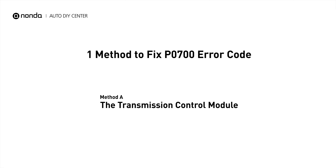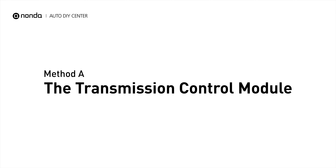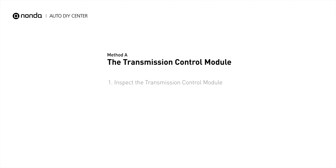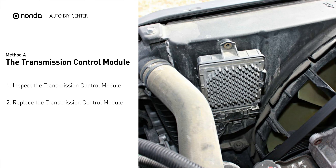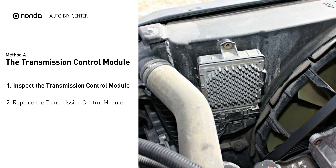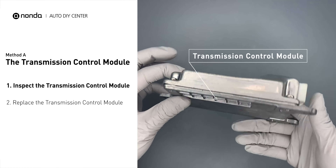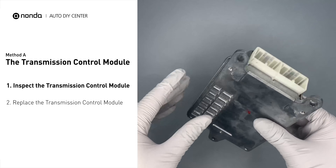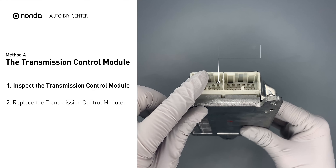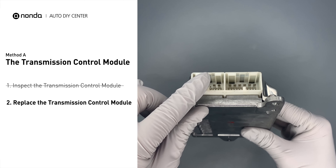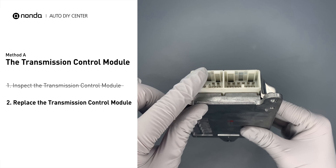Here is a simple DIY method you can try to solve this problem. Method A: the transmission control module. The transmission control module can often be found below the cover at the back of the transmission case, just below the engine control module's position. Visually check the transmission control module itself and its electrical connections for any damages. If damages are found, then replace the transmission control module.